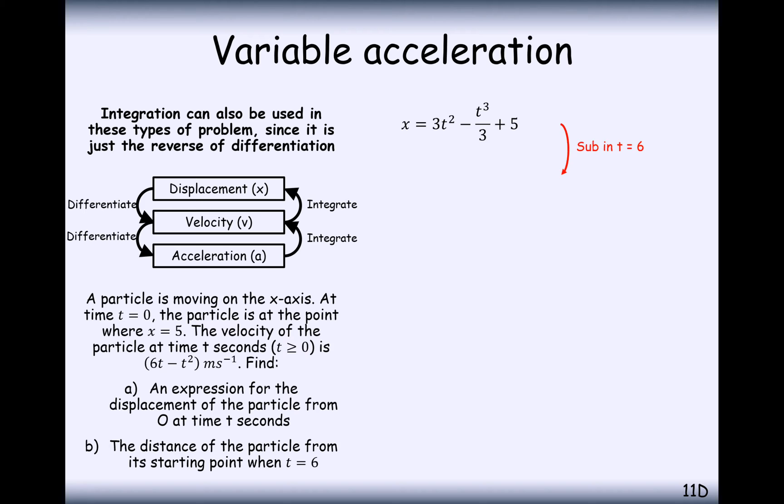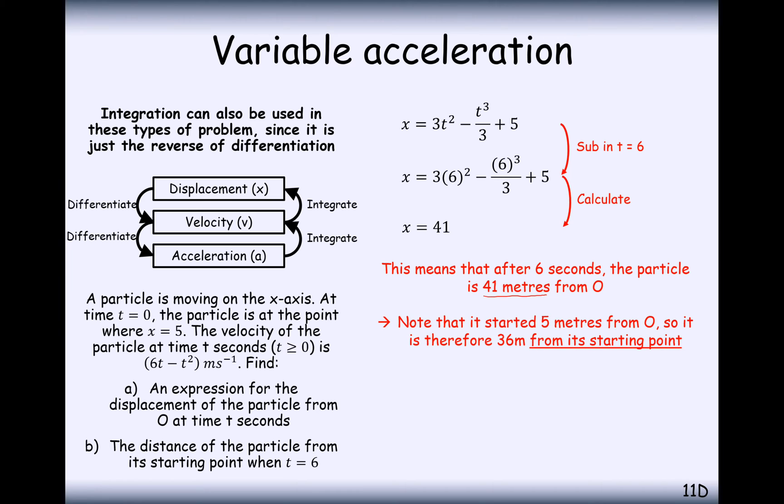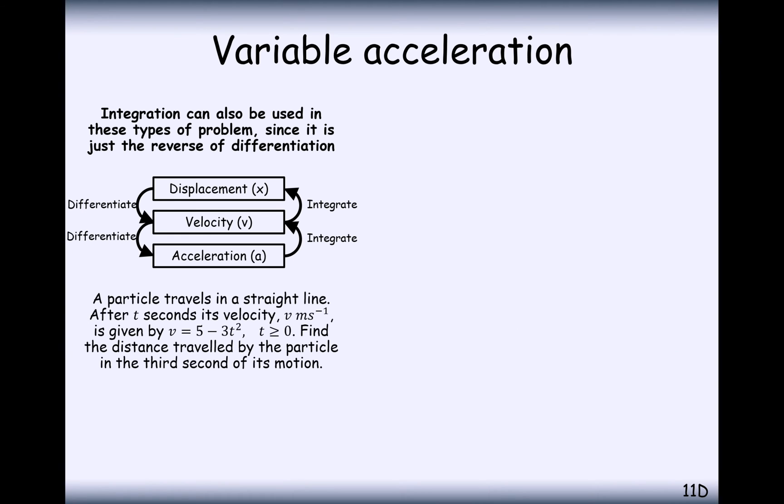Part B is to just substitute in the value of 6. So it's 41. The distance of the particle from its starting point is 41. And the units here is in meters per second, so this is going to be in meters. After 6 seconds, it's 41 meters from O. Note that given that it starts at 5 meters, it's 36 meters from its starting point. Read the question carefully there. That almost caught me out.